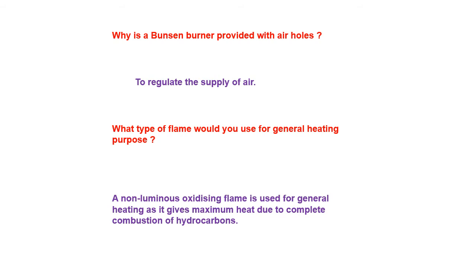What type of flame would you use for general heating purpose? There are two types of flames. One is a sooty flame — sooty meaning smoky, which gives smoke. The second one is a non-sooty flame, which will not give smoke. Sooty flame is yellowish or yellowish-black, whereas non-sooty is a bluish flame. Bluish flame is the best flame. Therefore, the type of flame we would expect from the burner, after adjusting the regulator for proper air supply, is a bluish flame.